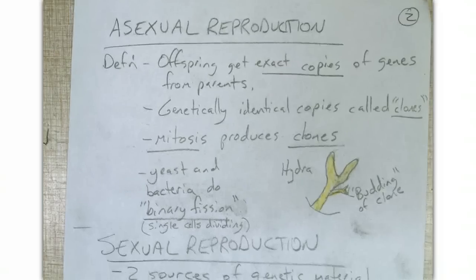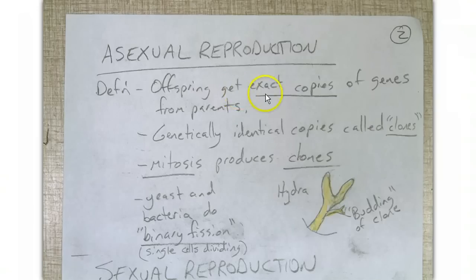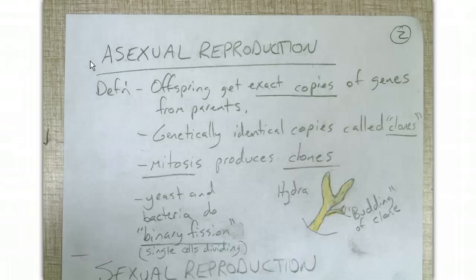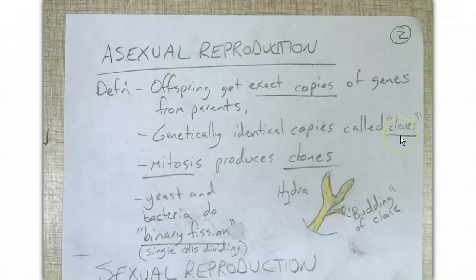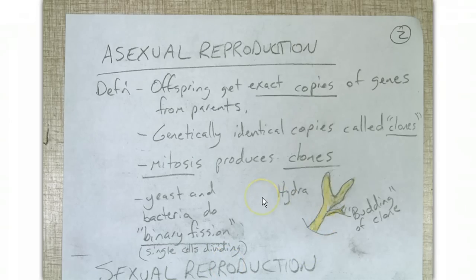Now some notes on asexual reproduction. The definition: the offspring gets exact copies of genes from the parents — asexual means without sex, no male or female involved. We're making genetically identical copies called clones. A clone is a genetically identical copy. Nature's clones would be things like identical twins that came from the same fertilized egg. Mitosis, or making exact copies, produces the clones. Yeast and bacteria do something called binary fission — basically single cells dividing. Here we have a sketch of our hydra, a little relative to the jellyfish, about the size of your fingernail, with the little budding of a clone asexually. That would be a good example to know.